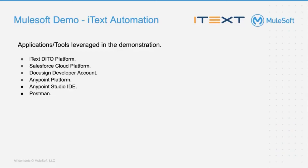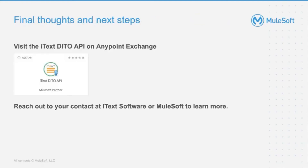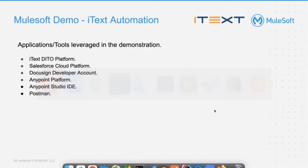Now we will get into the actual demonstration. The applications used are: iText Deto platform for document generation, Salesforce cloud platform as the source of data, a DocuSign developer account for e-signature generation, Anypoint Studio IDE for building integrations, Anypoint platform for deploying integrations on the cloud, and Postman for making HTTP requests to initiate the integration.